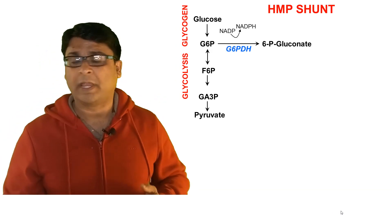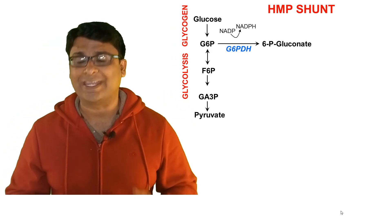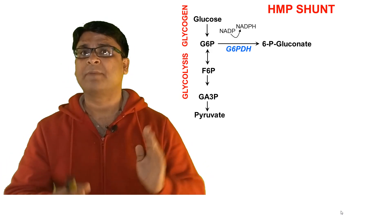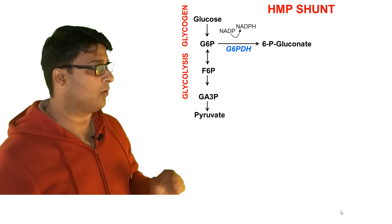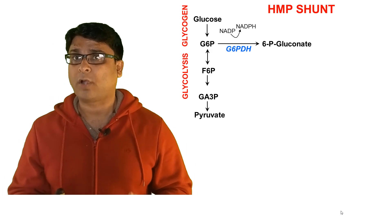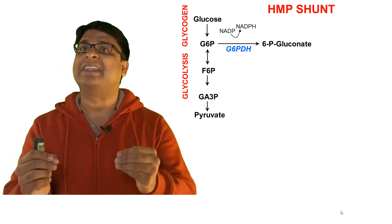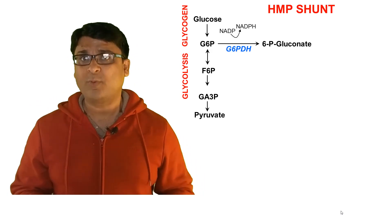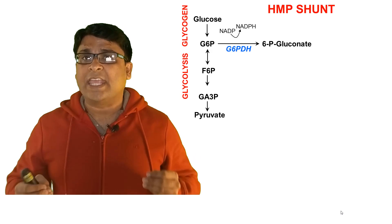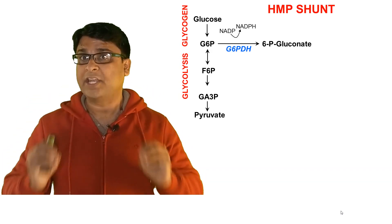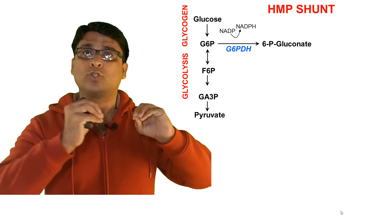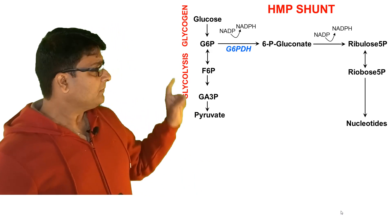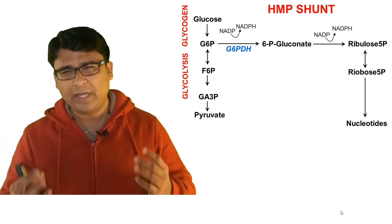Glucose-6-phosphate can be acted upon in different cells of your body to generate 6-phosphogluconate, and the key enzyme working here is glucose-6-phosphate dehydrogenase — the key enzyme for HMP shunt pathway. Since the enzyme is a dehydrogenase, it always plucks out electrons. Whenever there is a word 'dehydrogenase,' you should think that it plucks high-energy electrons from carbon atoms and puts those electrons onto carriers. Here the carrier is NADP, which is converted into NADPH.